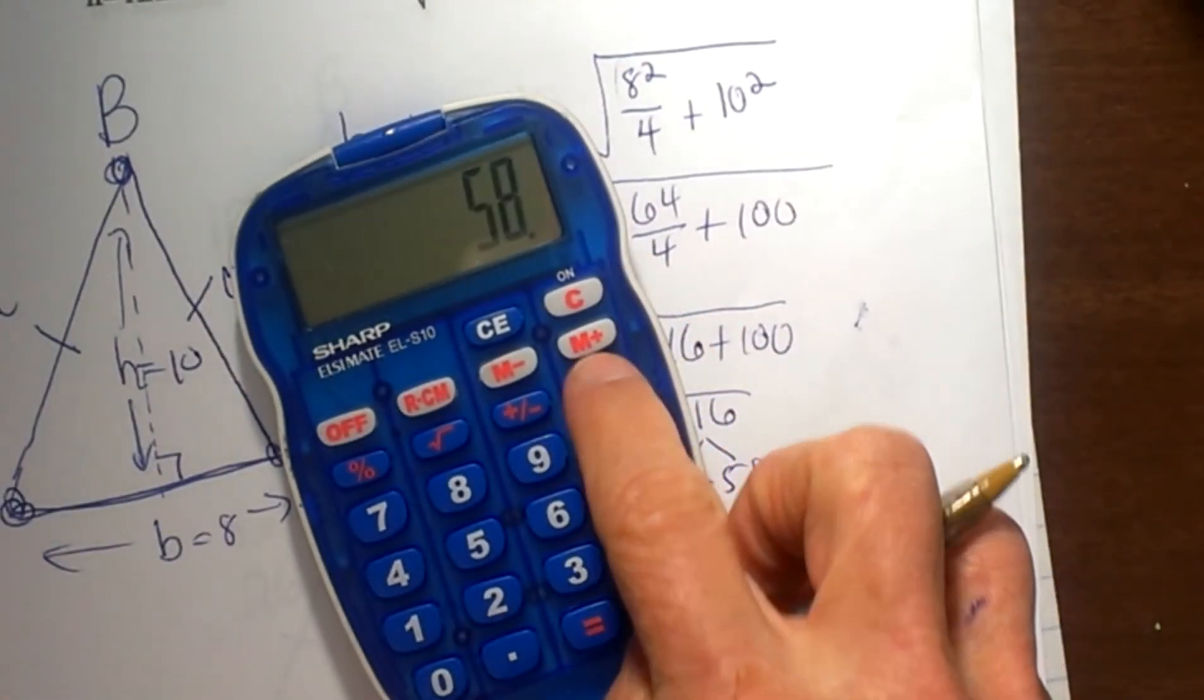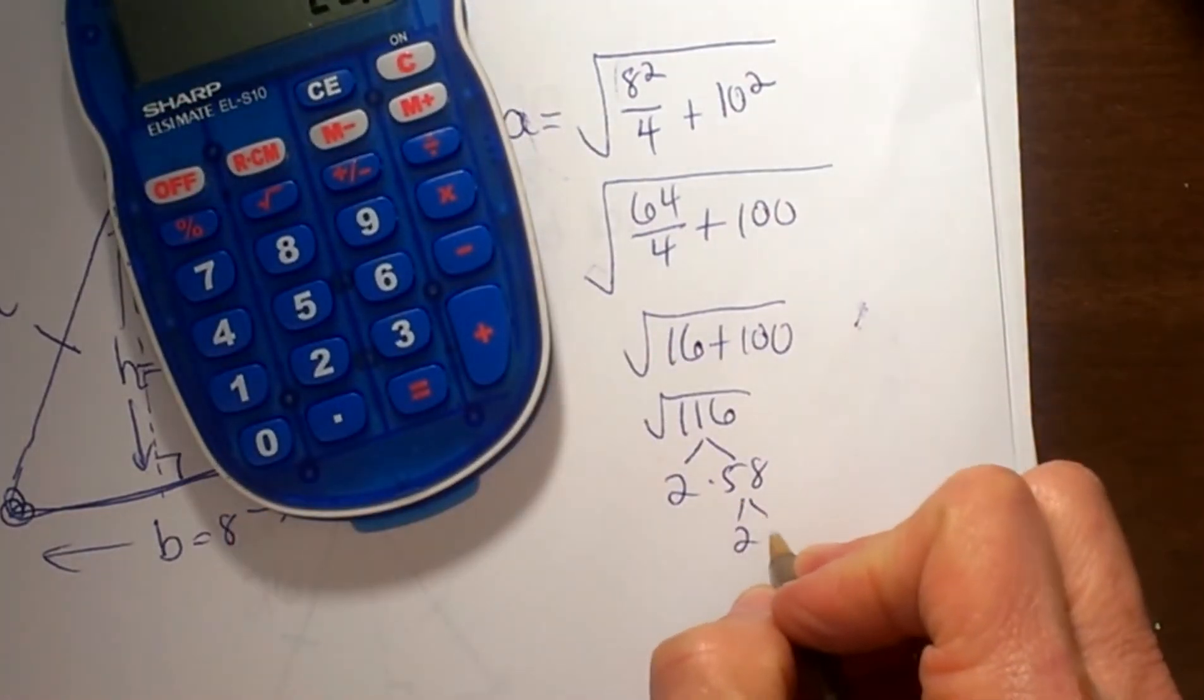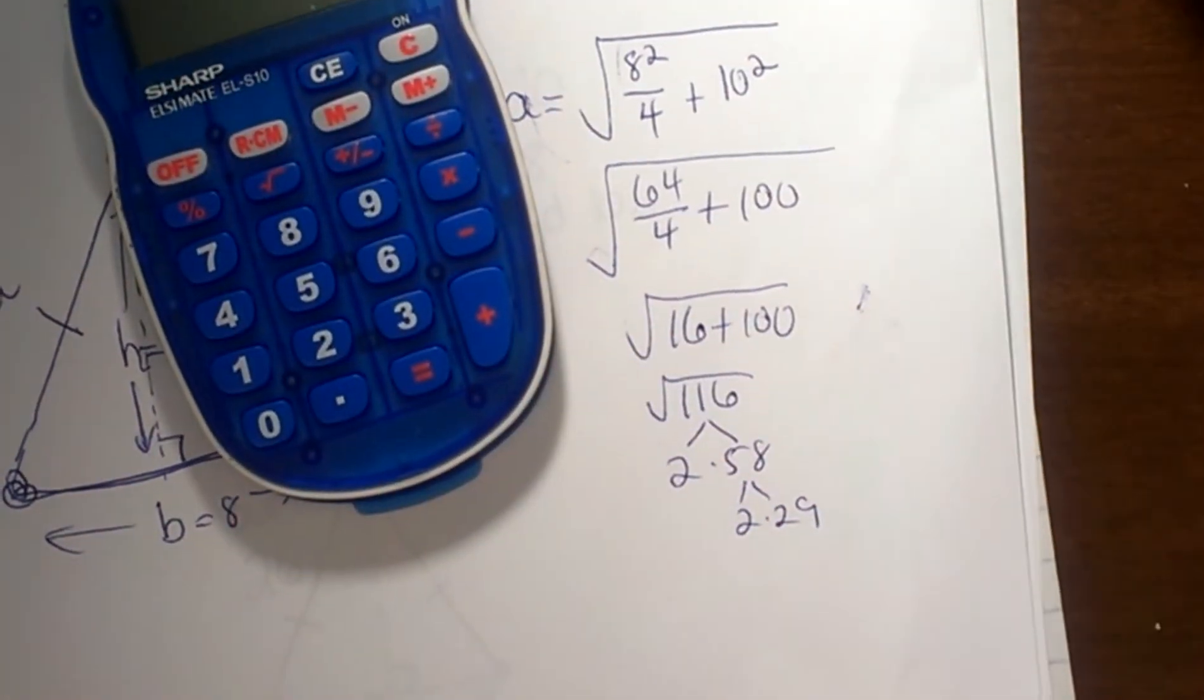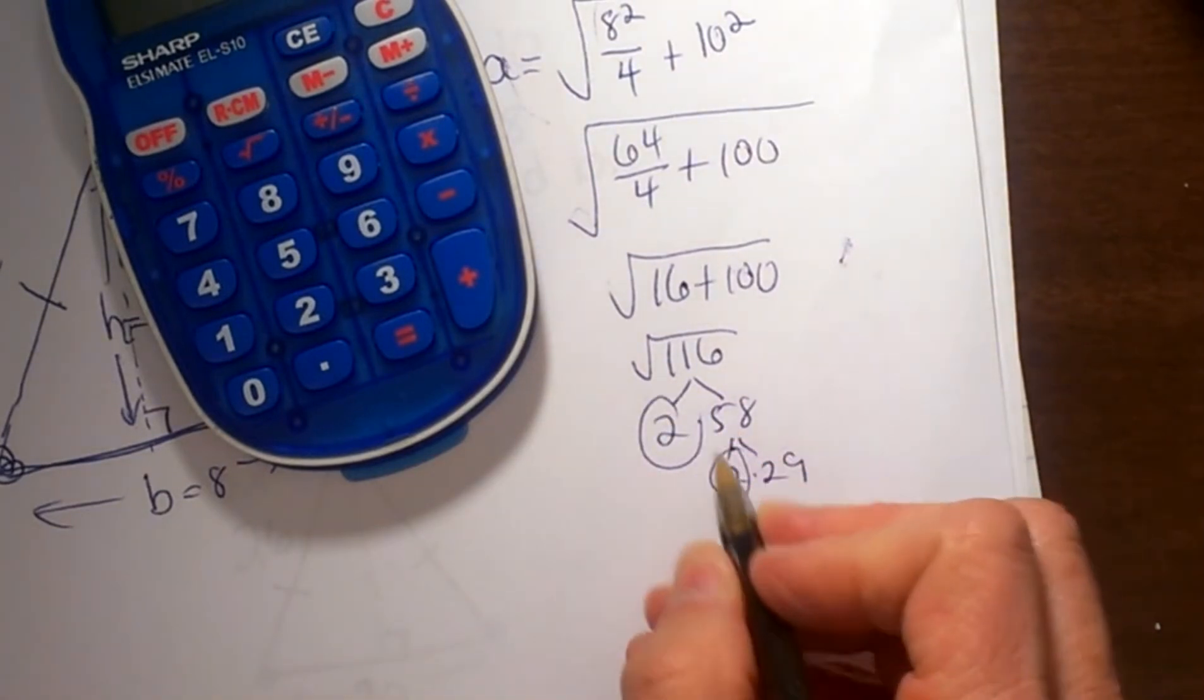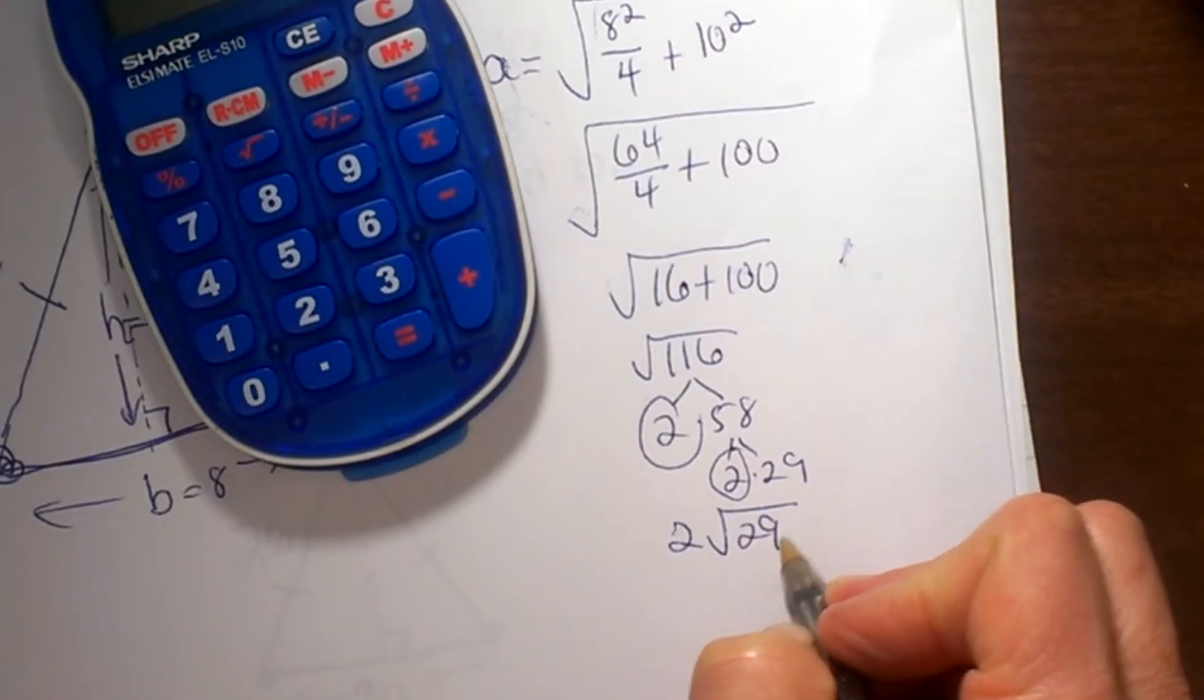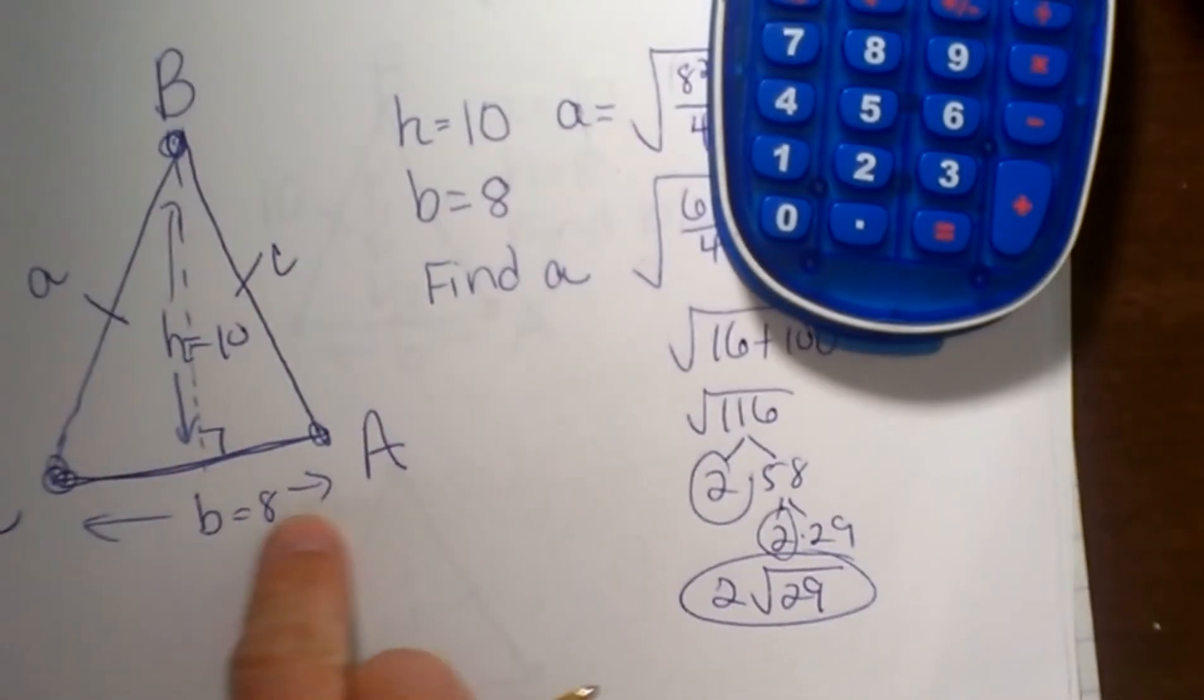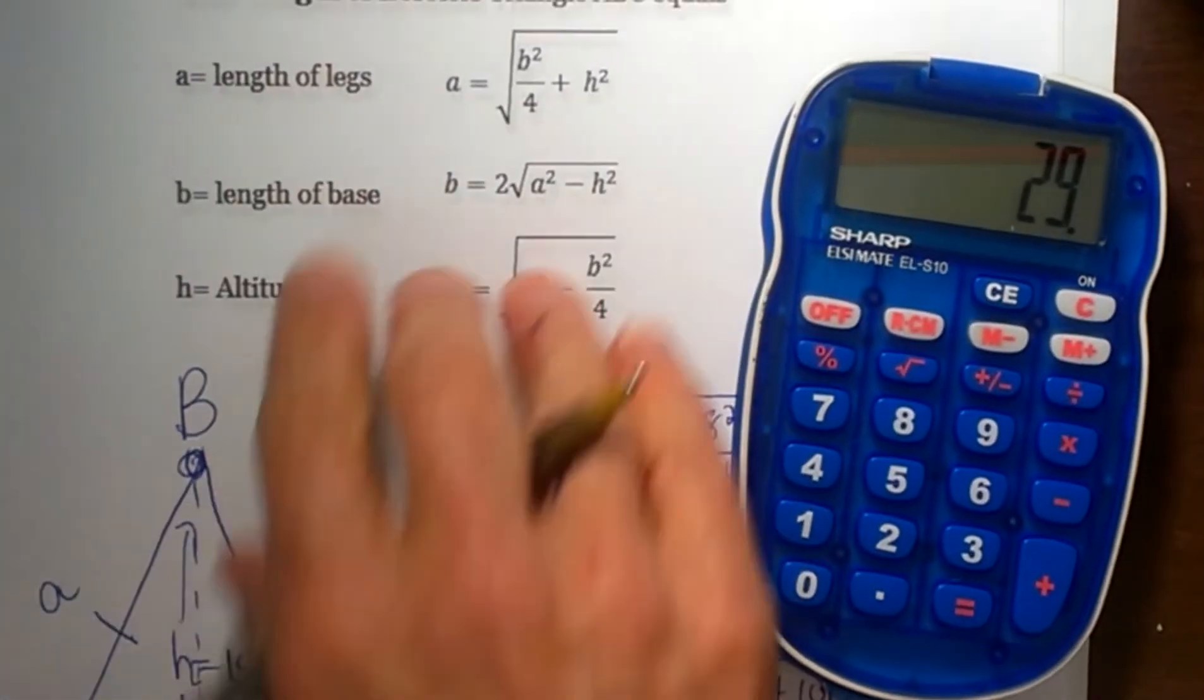Once I get a pair, I can take it out of the radical. So this simplifies to 2√29, and that's how long the side of this triangle is using this formula.